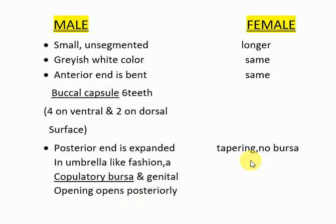In the female, no copulatory bursa is present; the posterior end is tapering and the genital pore opens at the junction of the posterior and middle third of the body.